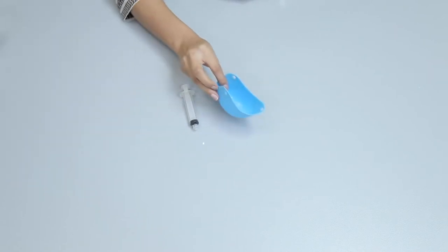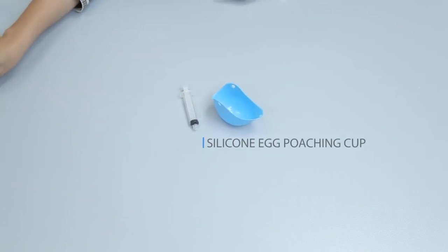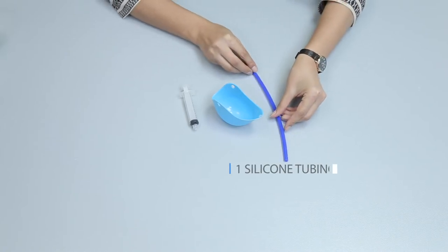So for this, take out one syringe, one silicon egg poaching cup and one silicon tubing from the kit.